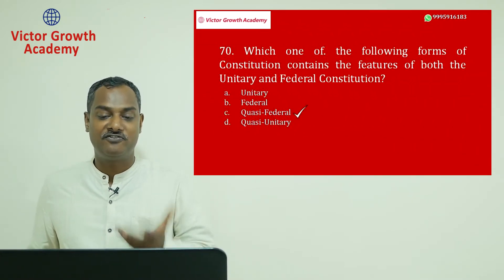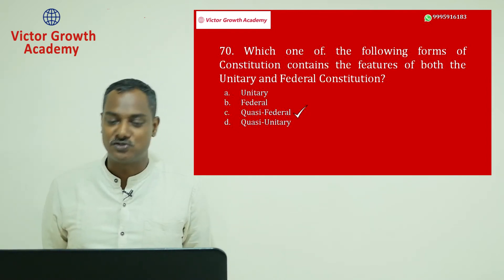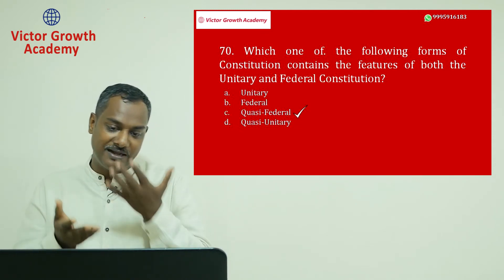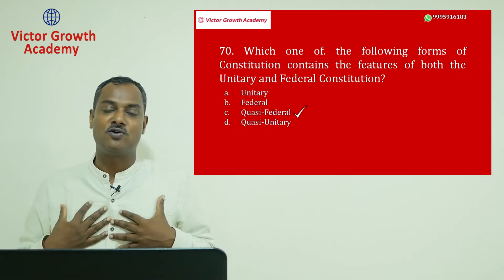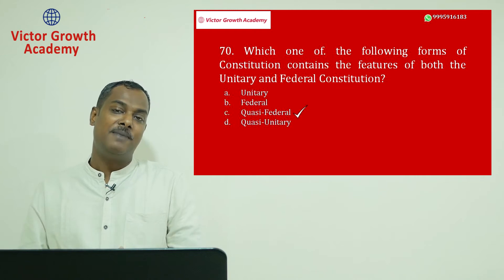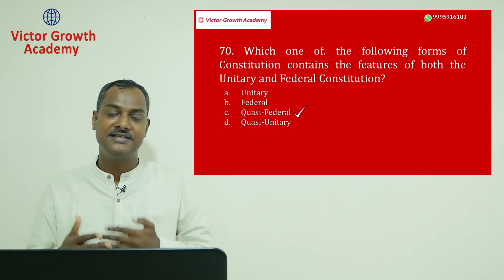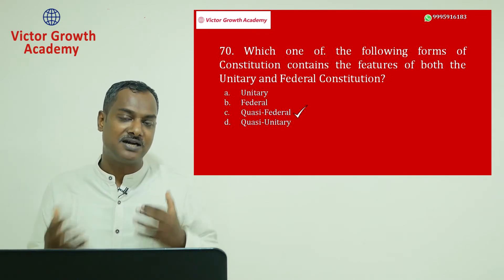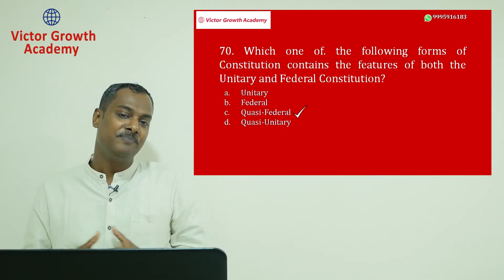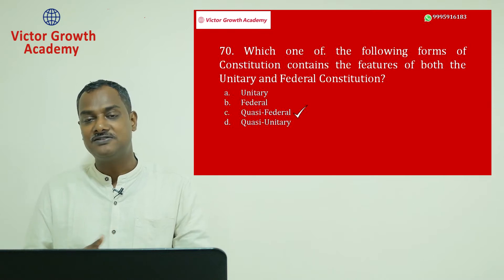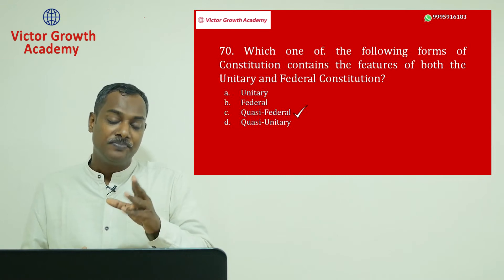Question number 70: which form of constitution contains features of both unitary and federal constitutions? I felt the question could be wrong because quasi-federal is also an answer. India is actually quasi-federal — under normal circumstances it is federal with division of power between central and state governments, but in extraordinary conditions like war or security threats, the entire state list becomes a concurrent list.